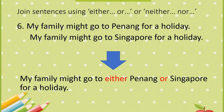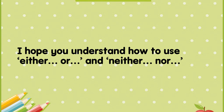Number six: 'My family might go to Penang for a holiday' and 'My family might go to Singapore for a holiday' — combined: 'My family might go to either Penang or Singapore for a holiday' — sama ada Penang ataupun Singapura. I hope you understand how to use either/or and neither/nor. Stay tuned for the exercises I'm going to share on WhatsApp. Take care everyone, bye-bye for now!